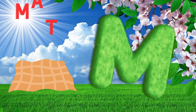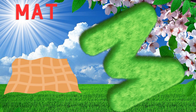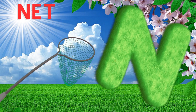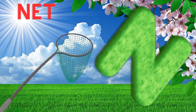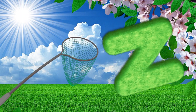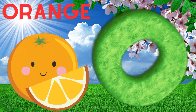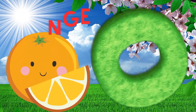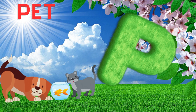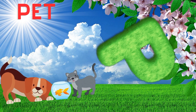M is for mat, m-m-mat. N is for net, n-n-net. O is for orange, o-o-orange. P is for pet, p-p-pet.